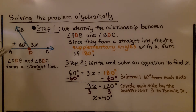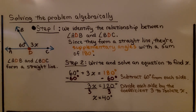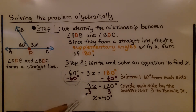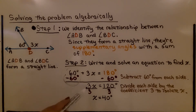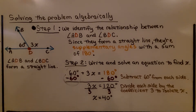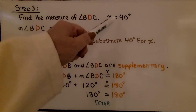We have 60 plus 3x is equal to 180 degrees. We subtract 60 from each side, which eliminates it, and we're left with 3x equals 120 degrees. Now we divide each side by the coefficient 3 to isolate x. We get 3 over 3, which is 1x, and 120 degrees divided by 3, which is 40 degrees. So x is equal to 40 degrees.